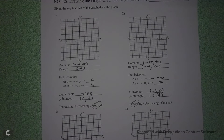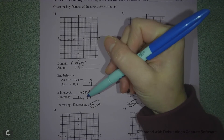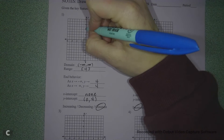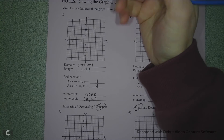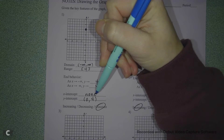The easiest thing to do is to start with the x-intercepts and the y-intercepts. So this y-intercept is at (0, 4), so we're going to put a dot at (0, 4). It says that it doesn't have an x-intercept.